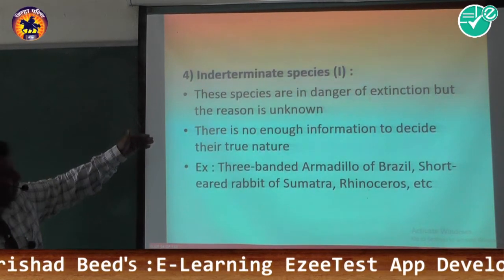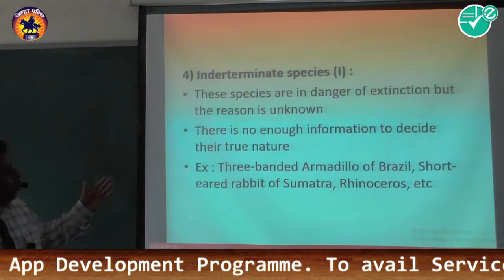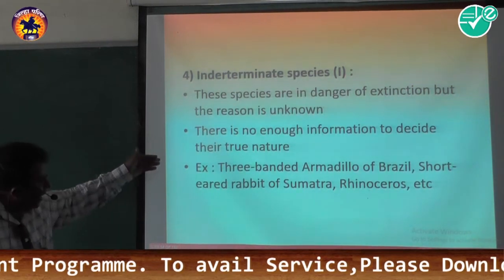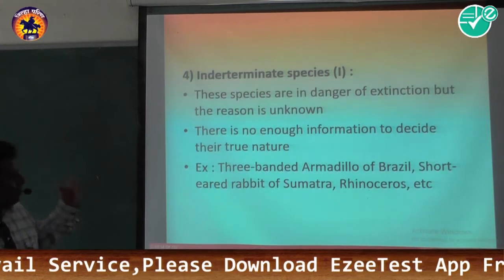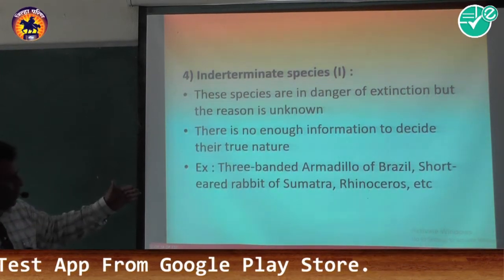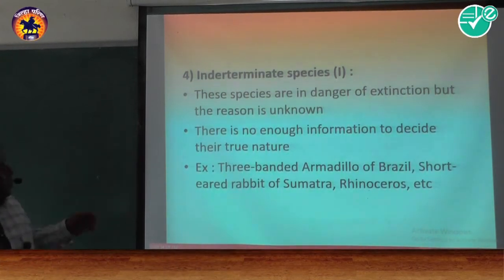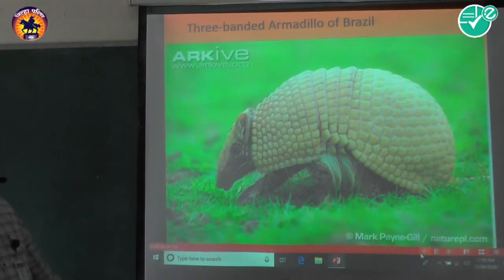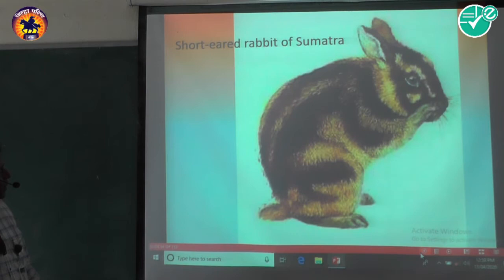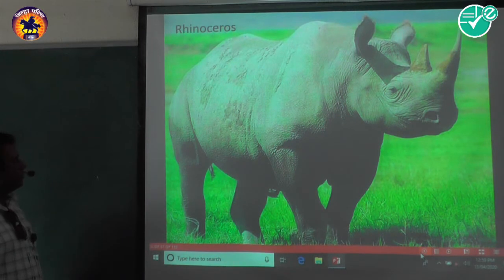The fourth category is Indeterminate Species — species that are endangered with extinction but whose reasons are unknown due to insufficient information to decide their true nature. Examples include the three-banded armadillo of Brazil, the short-eared rabbit of Sumatra, and the Javan rhinoceros.